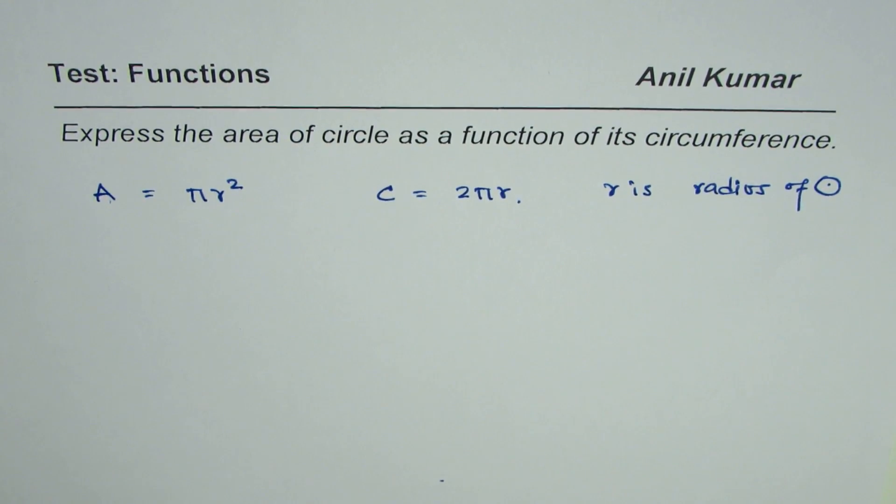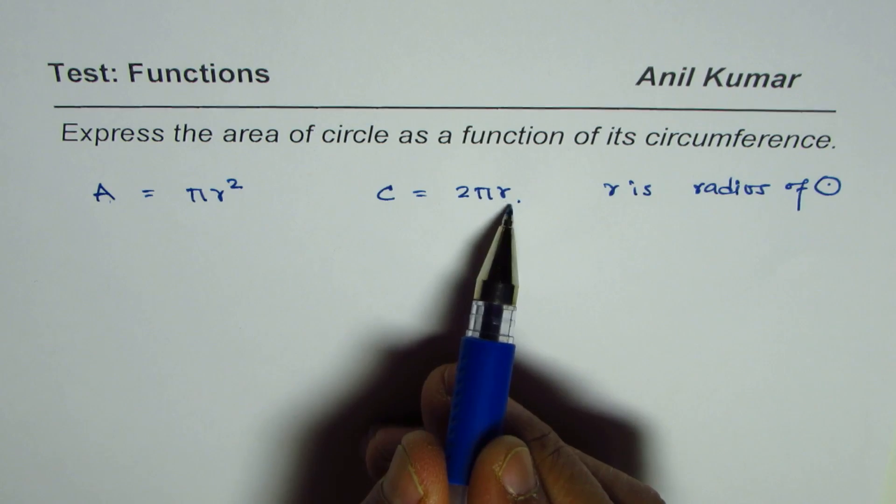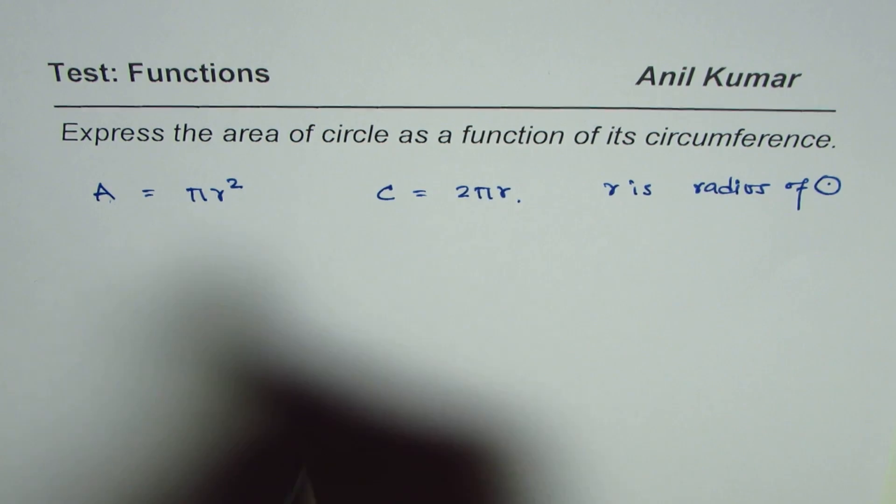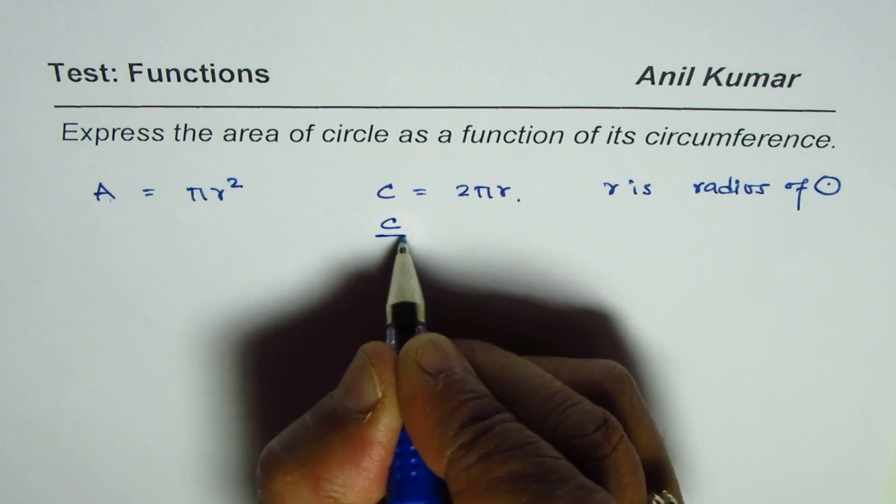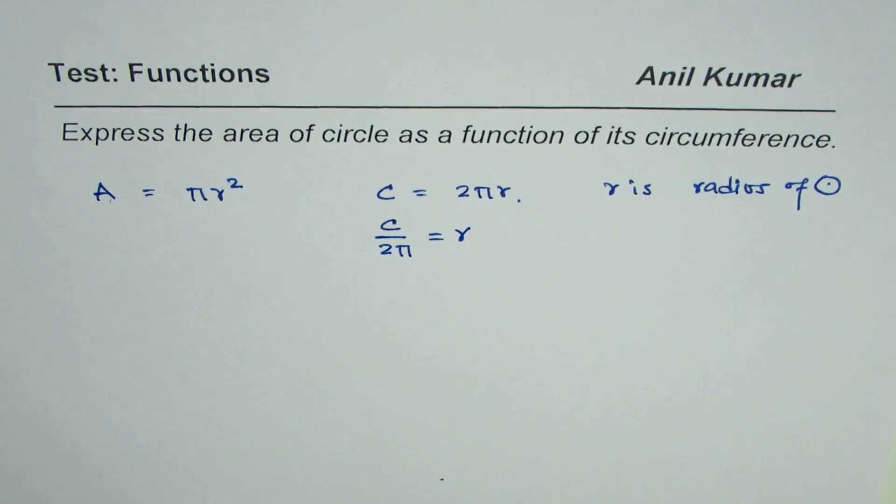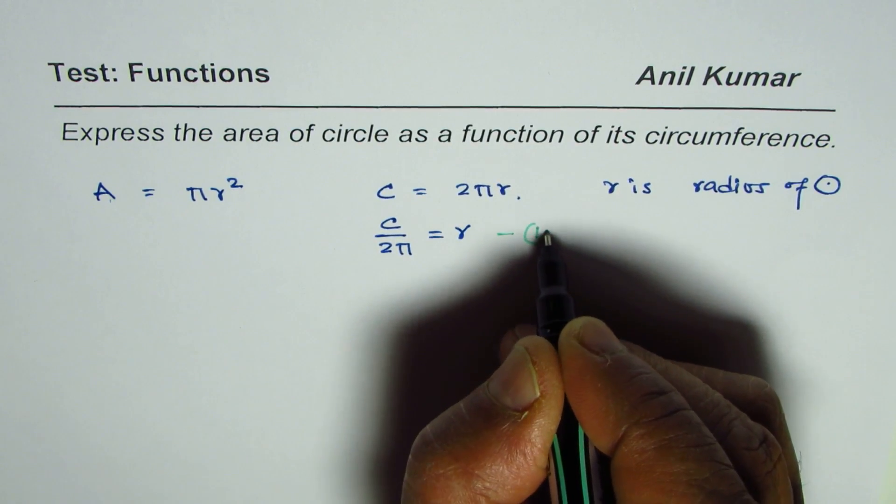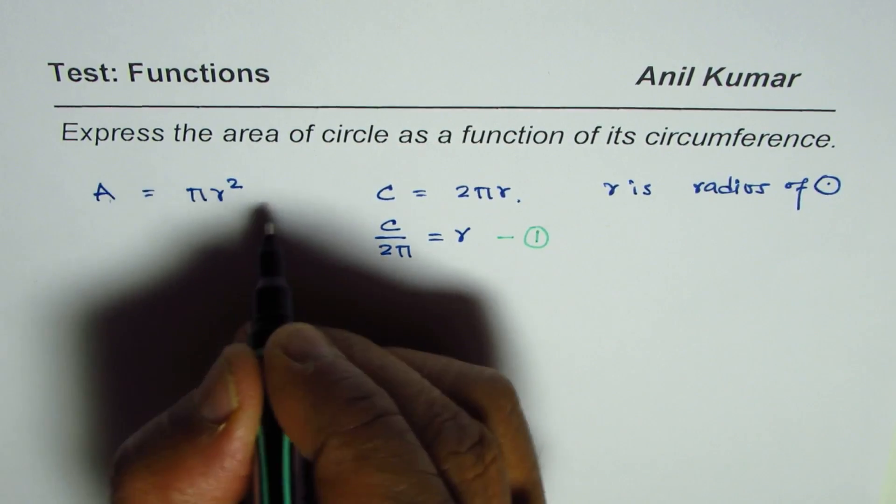So how are you going to do it? Well, the method is: from the formula circumference equals 2π r, we can find what r is. Circumference divided by 2π equals r. This is the equation we're going to use, and we'll substitute this equation